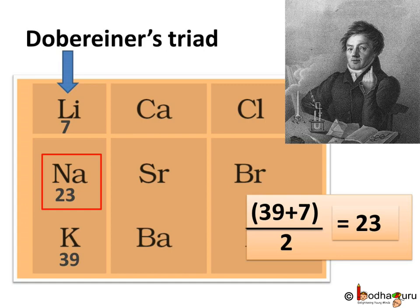The first triad consisted of elements lithium, sodium, and potassium. The atomic mass of lithium is 7 and that of potassium is 39. The arithmetic mean of the atomic masses of lithium and potassium is (39 + 7) ÷ 2 = 46 ÷ 2 = 23. And sodium, which is the middle element in this triad, has an atomic mass equal to 23 — which is the arithmetic mean of the atomic masses of lithium and potassium.